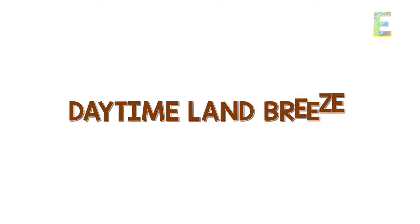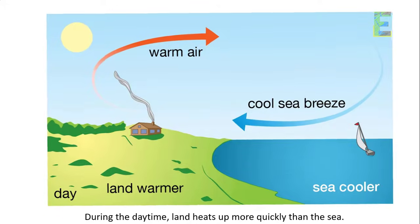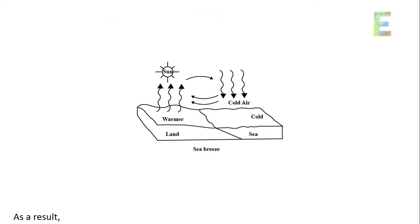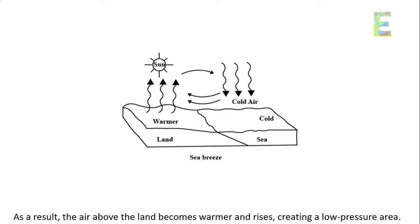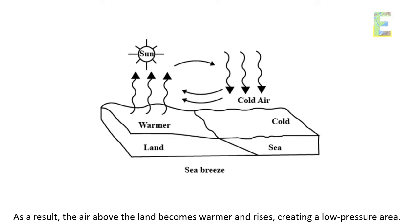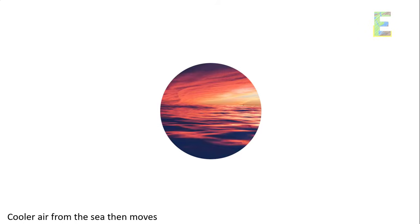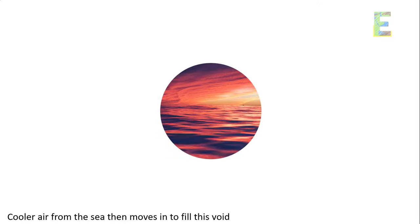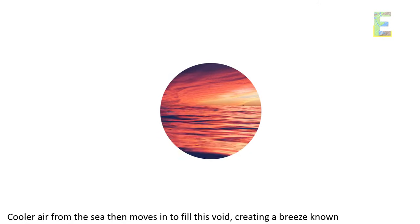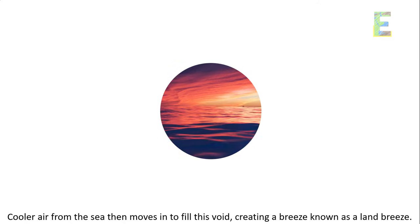Daytime land breeze. During the daytime, land heats up more quickly than the sea. As a result, the air above the land becomes warmer and rises, creating a low-pressure area. Cooler air from the sea then moves in to fill this void, creating a breeze known as a land breeze.